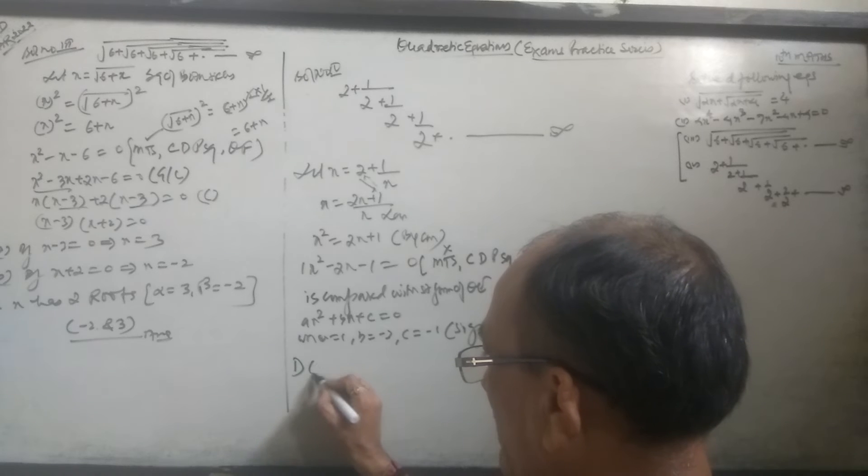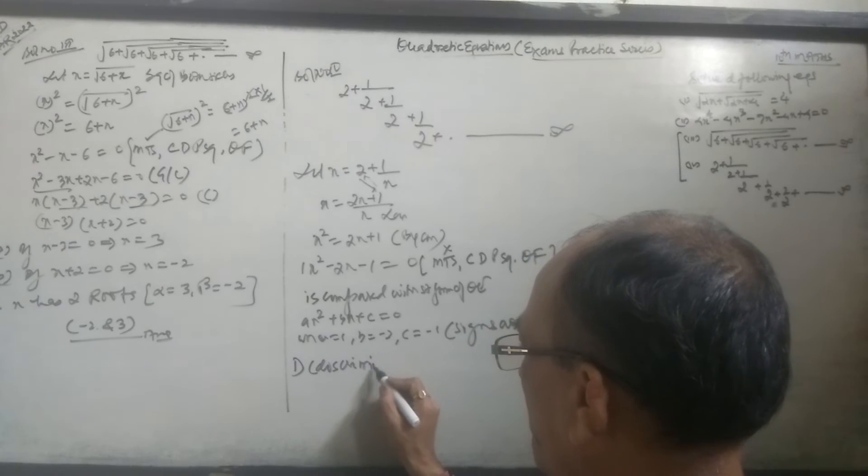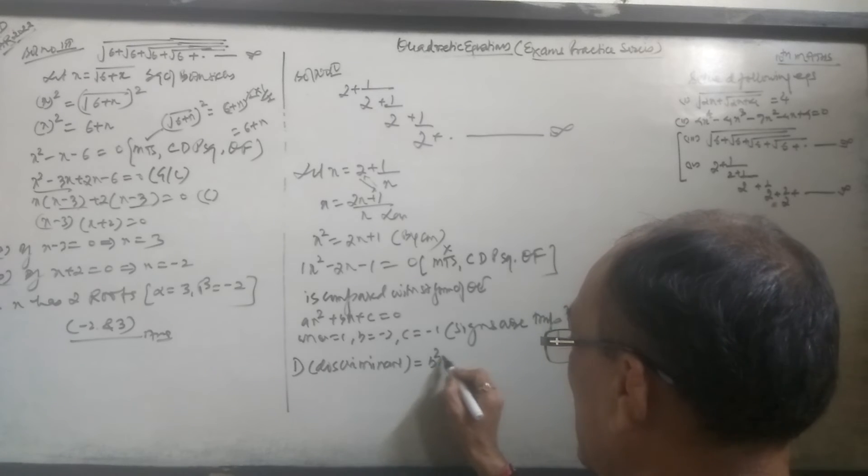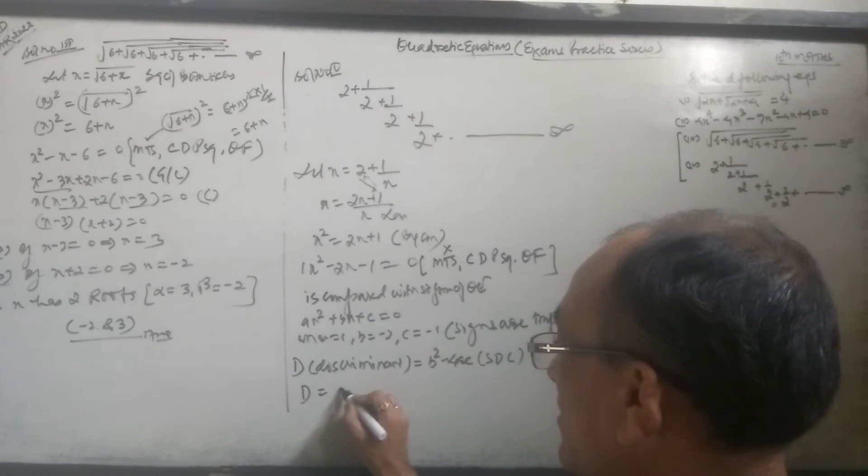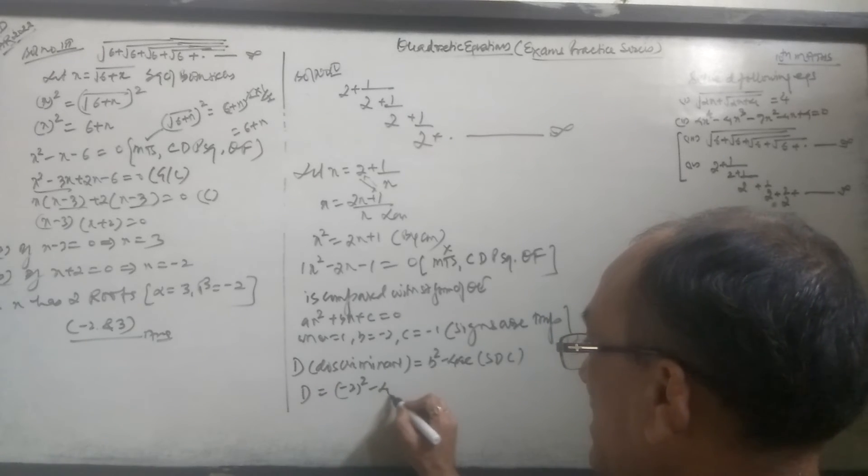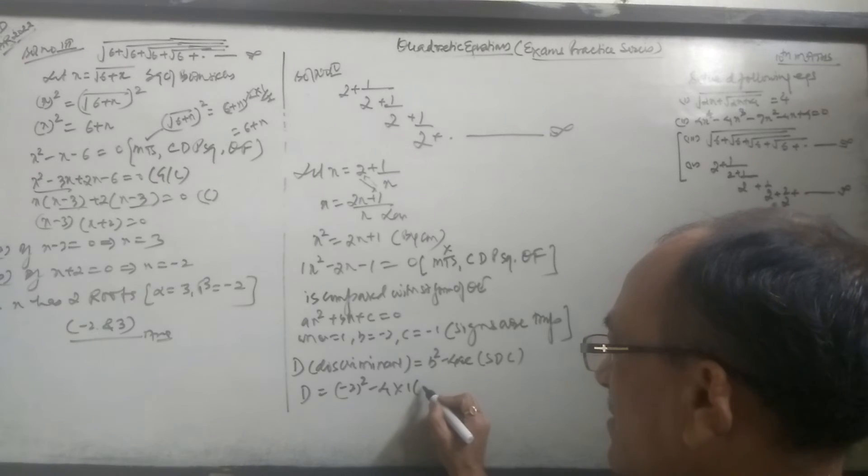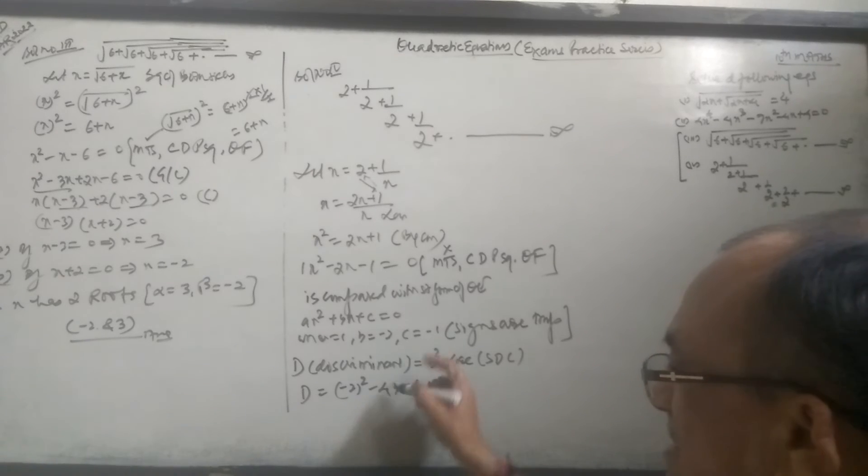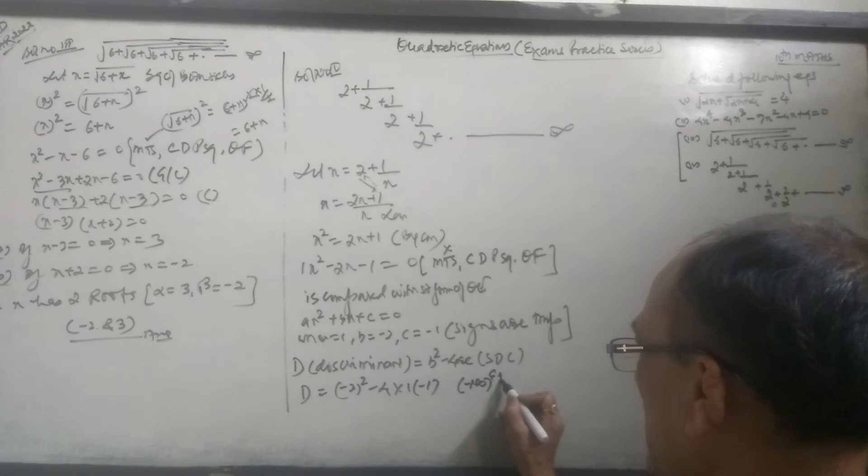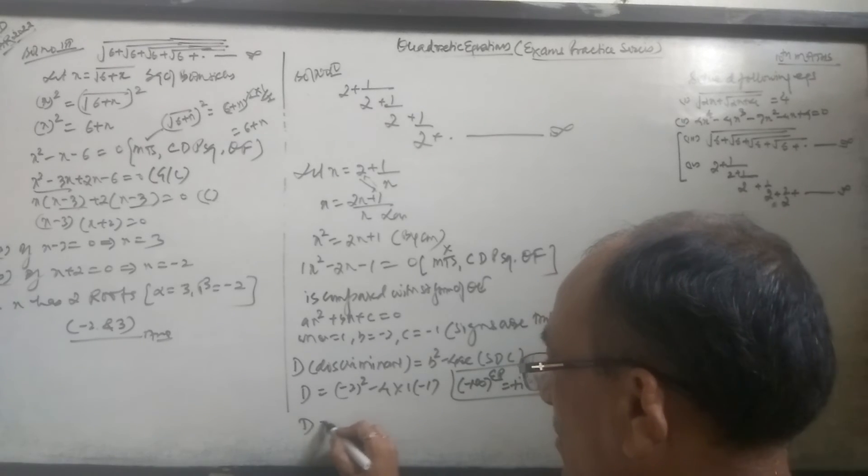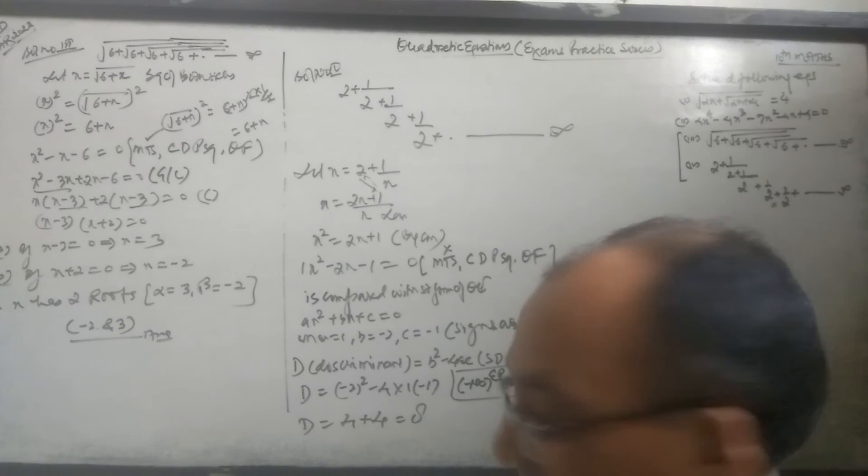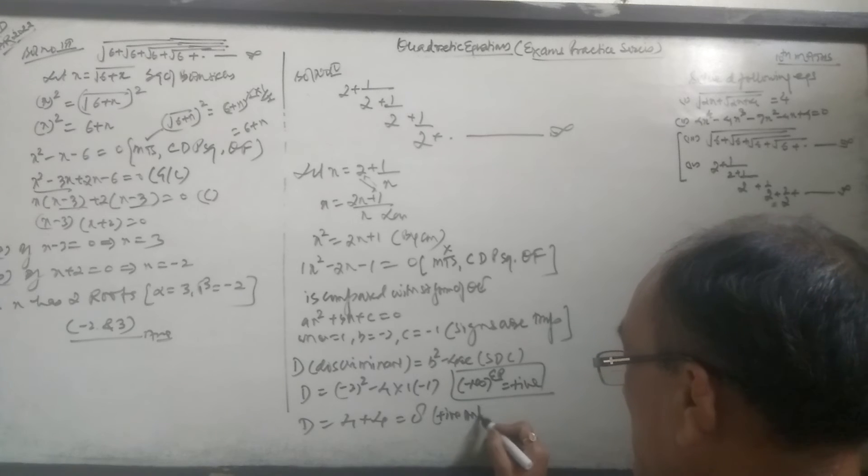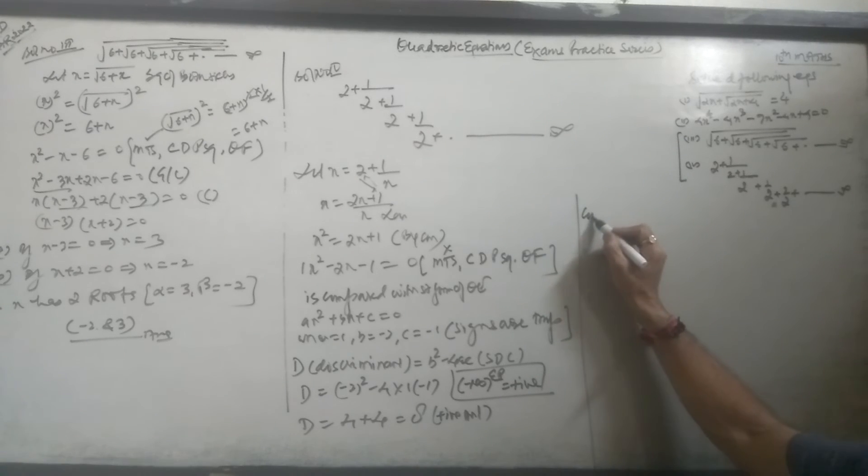Now D means discriminant: b² - 4ac. D = (-2)² - 4(1)(-1) = 4 + 4. If any negative number has even power, answer is positive. D = 4 + 4 = 8. This is positive, the discriminant is positive.